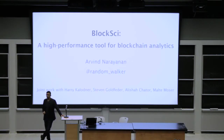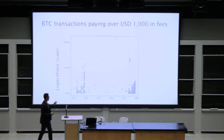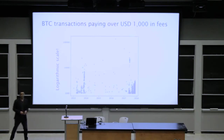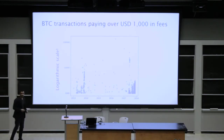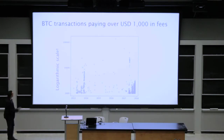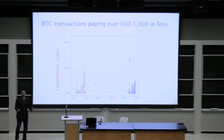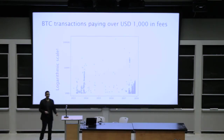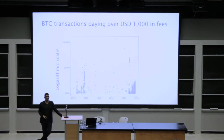Let me start with something perhaps whimsical, a little bit tragicomical. Let's look at all the transactions on the Bitcoin blockchain that have paid over $1,000 in transaction fees. Here we see a chart where the x-axis is time and the y-axis is US dollars equivalent on a logarithmic scale — $1,000, $10,000, and $100,000. There's a crazy transaction up top that paid the equivalent of $137,000 US in transaction fees.